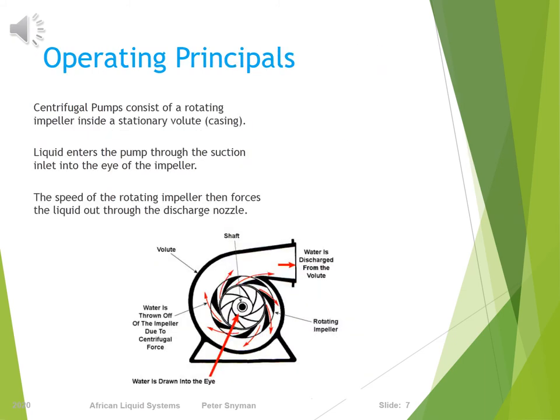The operating principles of a centrifugal pump: this group of pumps consists of a shaft-mounted impeller or impellers rotating unidirectionally within a casing. The liquid enters the eye of the impeller and acquires energy in the form of velocity as it passes through the impeller passages. The velocity head is converted into pressure head by the volute or spiral-shaped outer casing of the pump, which directs the liquid from the outer perimeter of the impeller to the pump discharge.